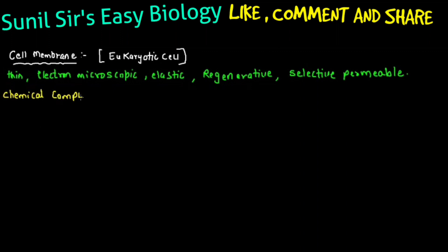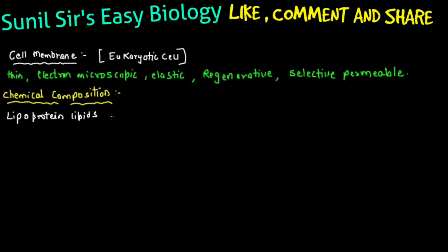Now, cell membrane with respect to chemical composition. Whenever we study chemical composition, we need to understand that each cell membrane is made up of lipoprotein. Basically it has lipids, and the proteins are more in amount, so we can say it is made up of lipoprotein. The lipids and proteins form the major component of the cell membrane.